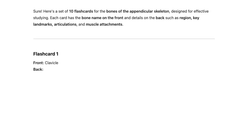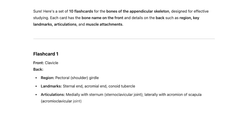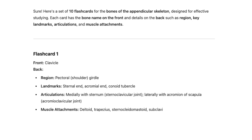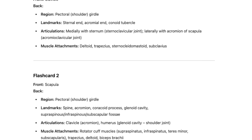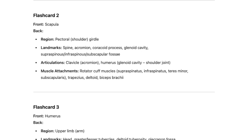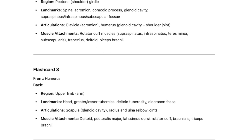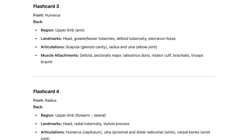Ask ChatGPT to make a set of flashcards for the bones of the appendicular skeleton, where the front tells you the name of the bone, and the back has the region, landmarks, articulations, and muscle attachments. You can then use these flashcards to test yourself, or even print them out for a physical version. This will save you tons of time trying to figure out what to write on your flashcards. You're welcome.